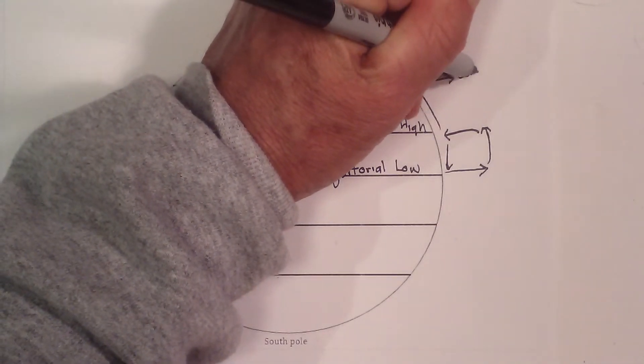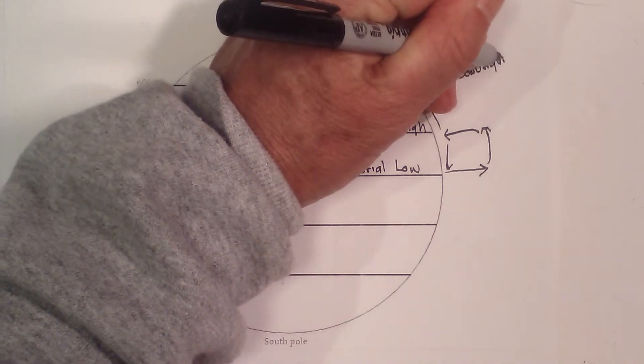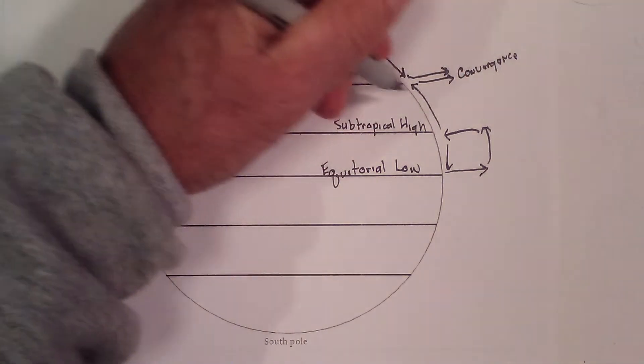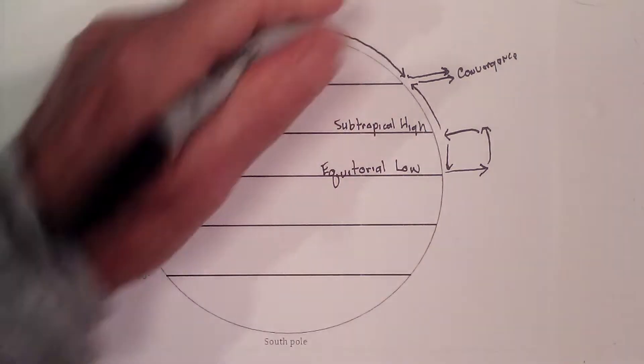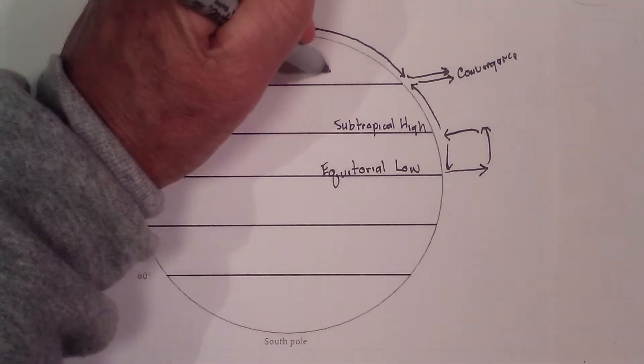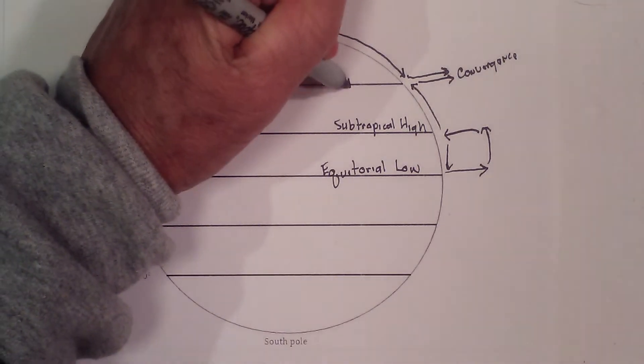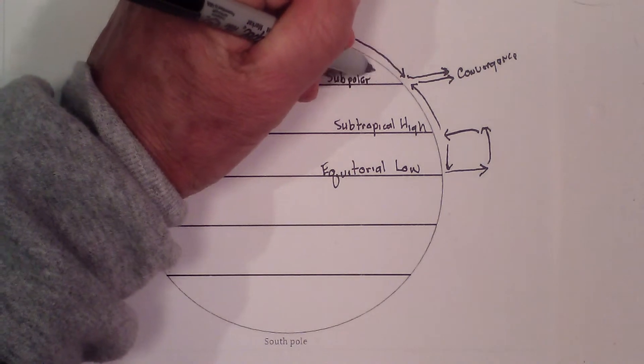So it rises from convergence and a little convection, but convergence, and it creates a low pressure system right here, and that is called the subpolar low.